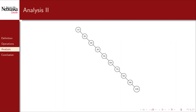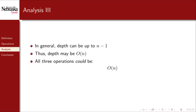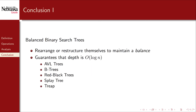Unfortunately, this is not true in general. Recall the degenerate or skewed tree — with ten nodes where every one has at most one child, the depth is 9. In general, the depth of a binary search tree can be up to n minus 1, making all three operations linear. There is hope, however: there's an entire class of balanced binary search trees that rearrange themselves upon insertion and deletion to guarantee the depth remains logarithmic. AVL trees, B-trees, red-black trees, splay trees, and treaps are all balanced binary search trees, just to name a few.